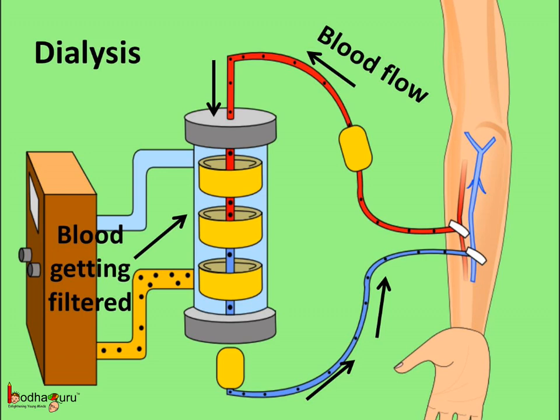A person can live a healthy life with just one kidney. But sometimes, due to diseases like diabetes or negligence, both kidneys may get damaged. Such persons cannot survive unless their blood is filtered periodically. The blood is filtered artificially using a machine — this process is called dialysis. The doctor connects the blood vessels of the patient to the dialysis machine. The impure blood flows through the machine and gets filtered, and the blood is then led back to the patient's body through a vein. Hence, the dialysis machine is also called the artificial kidney.